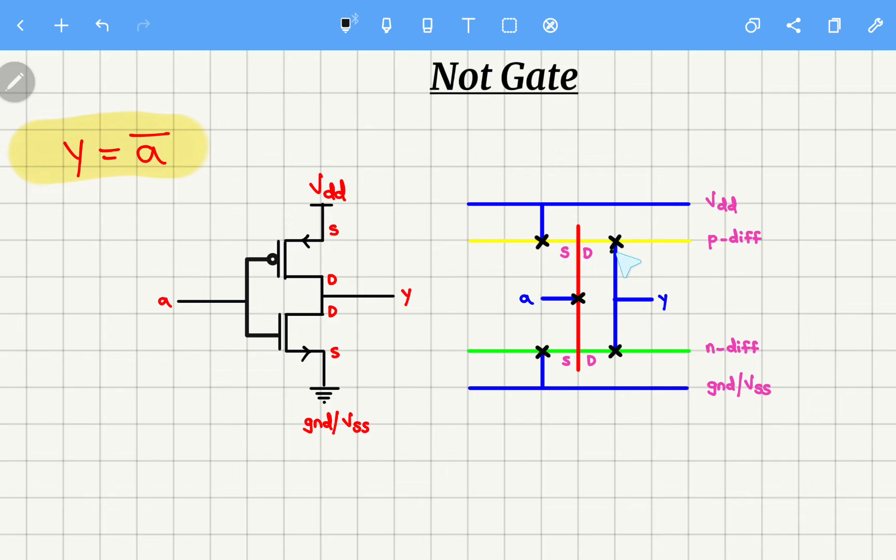Next, the one more thing which we have left here is this cross mark. So this cross mark is called a contact cut. When two different layers are joined together, it should be indicated with a contact cut. Means in simple words, when two different colors are joined together, it should be indicated with a contact cut.